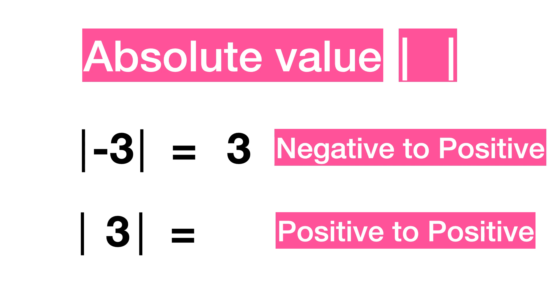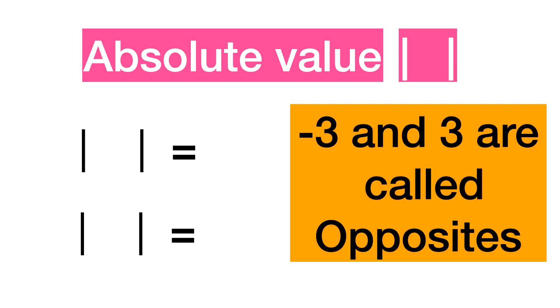If you put positive 3 into the absolute value symbol, then the value is the same 3. The absolute value symbol makes positive numbers to positive numbers.